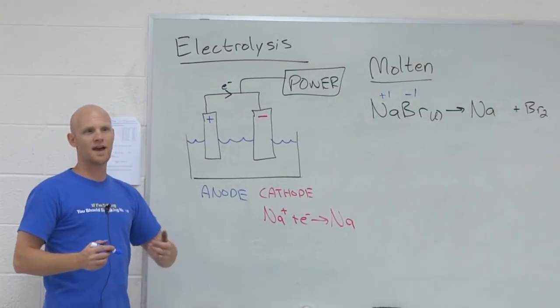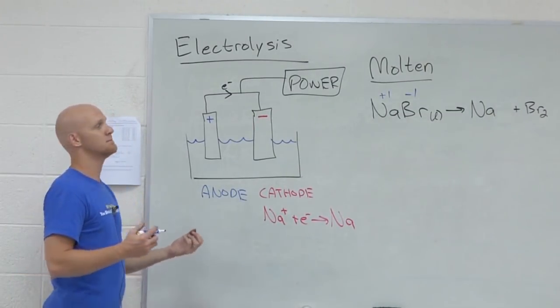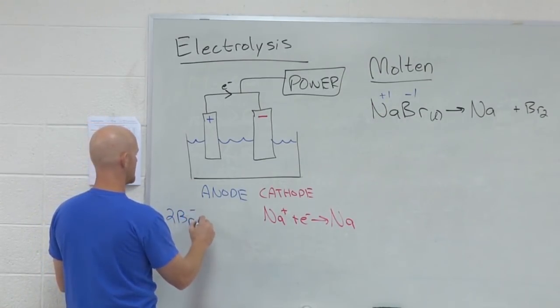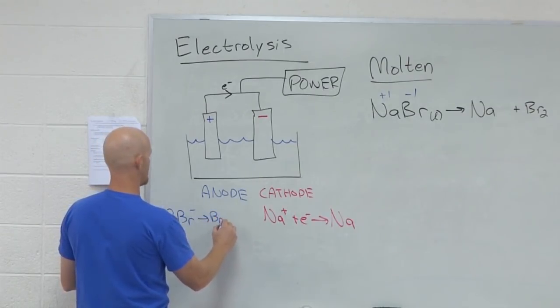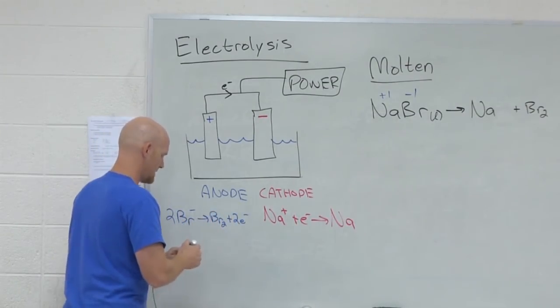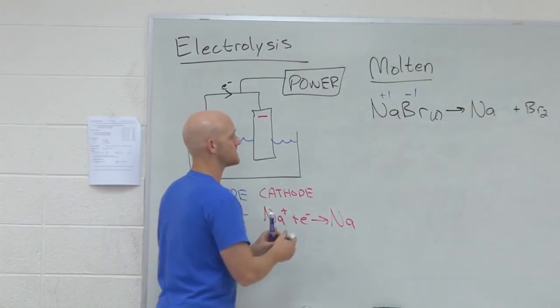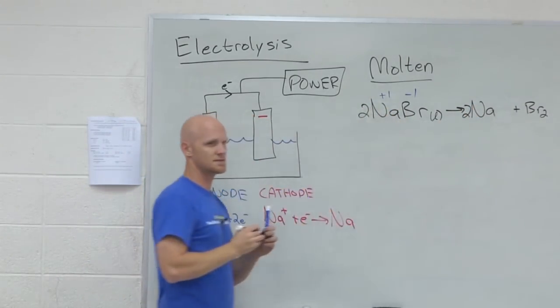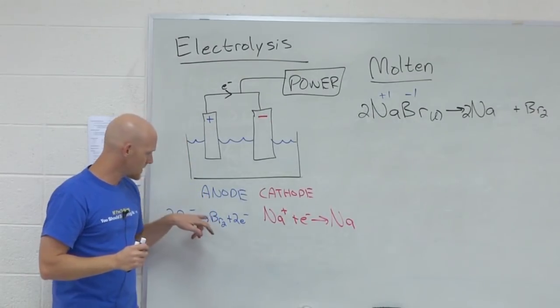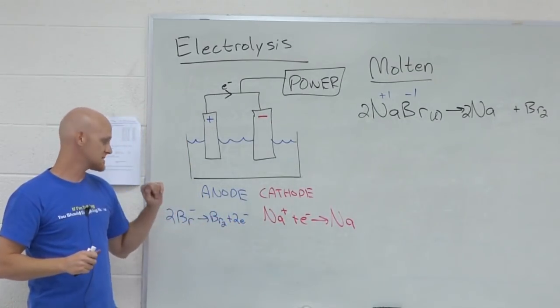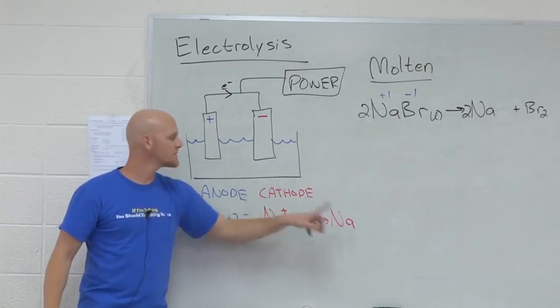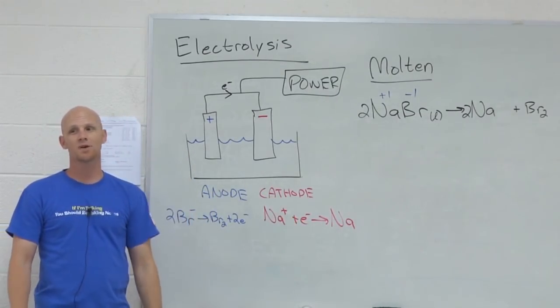And then which product formed at the anode? Br2. Br2. And if I look at it as a half reaction, I've got 2Br minus going to Br2 plus 2 electrons. So if you notice, we probably got to do a couple of things here to make sure this is balanced. But now we've got our half reactions. Bromine, elemental bromine is formed at the anode. Elemental sodium is formed at the cathode. Predicting the product super easy.